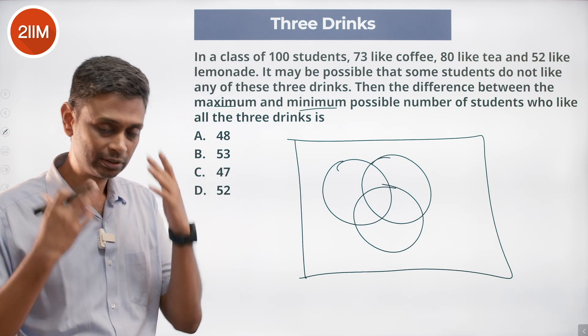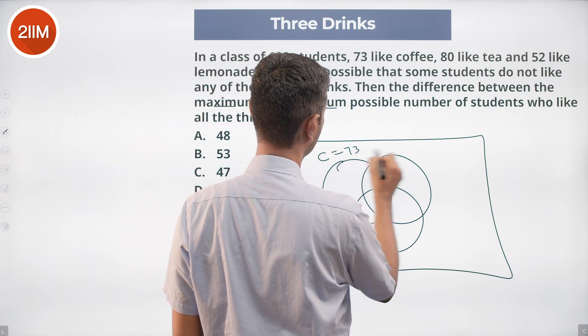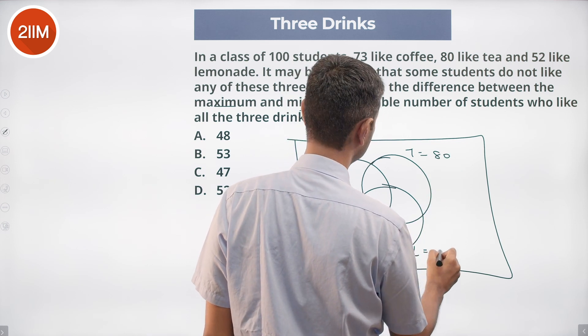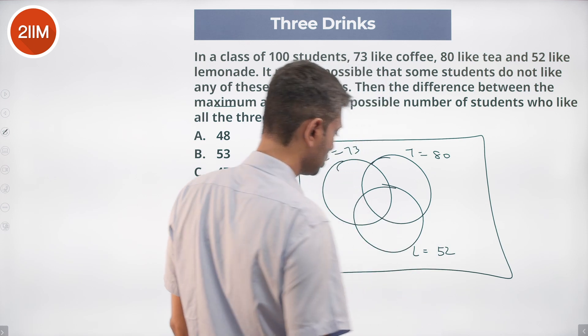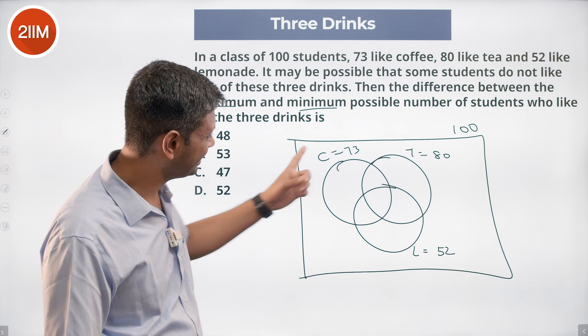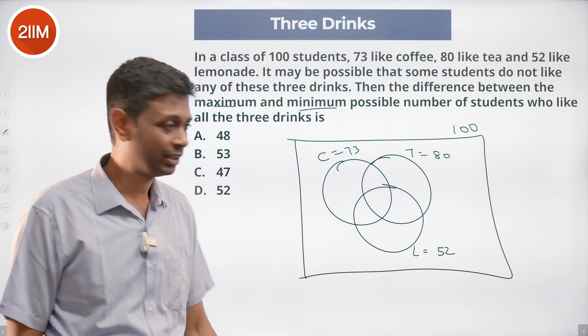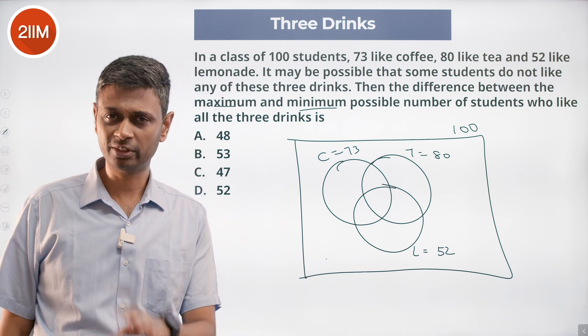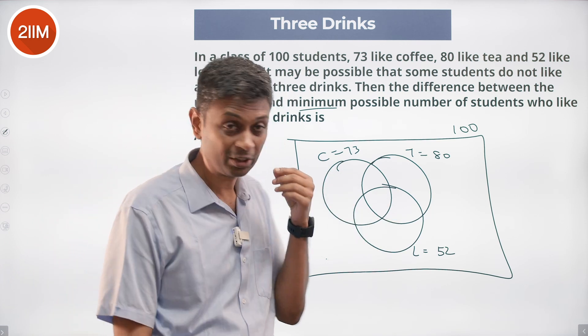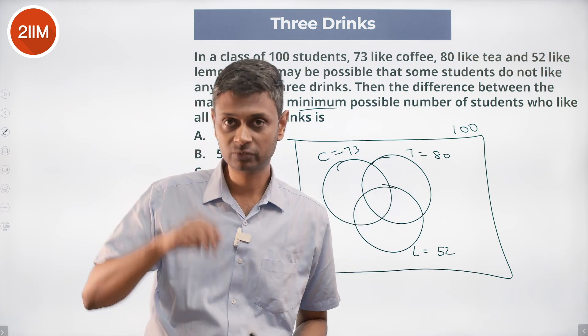Coffee is 73, tea is 80, lemonade is 52, totally there are 100. Simple rule of thumb: add these three - 73 plus 80 plus 52, right? If it's less than 100 then life is easy. That means that lot numbers here, life becomes super easy, that will generally not be the case. 73 plus 52 is 125, plus 80 is 205. It's more than twice of this.